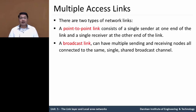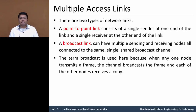The second one is a broadcast link. In that, we have multiple sending and receiving nodes and all nodes are connected to the same network. It can send on a broadcast channel, receiving a message from one sender to multiple receivers. Broadcast is used here because when any node transmits a frame or data packets, the channel broadcasts that frame to each of the other nodes, which receive the same packet.